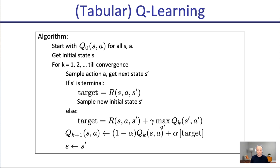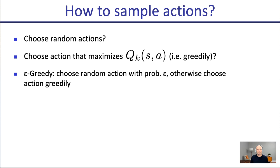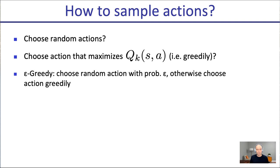How do we sample actions? You could choose the action that maximizes the Q-value greedily, but more popular is epsilon-greedy: randomly choose an action with probability epsilon, otherwise choose the action greedily. This is exploration — by experiencing other actions we get updates for states and actions we wouldn't otherwise visit. Those other actions could be better, so exploration is important.